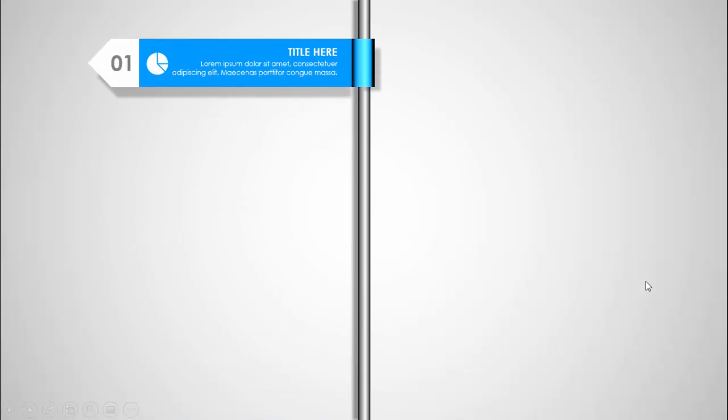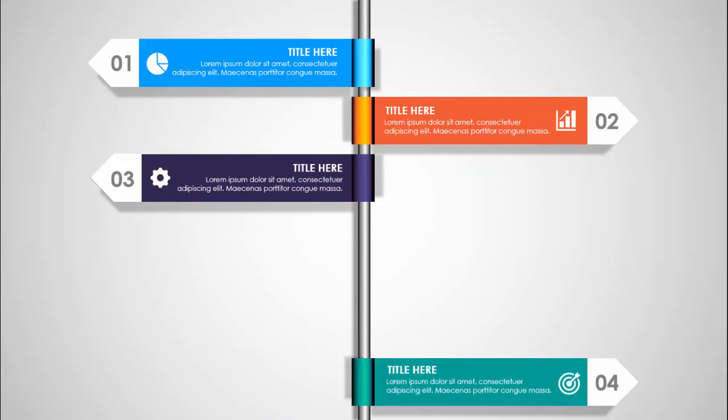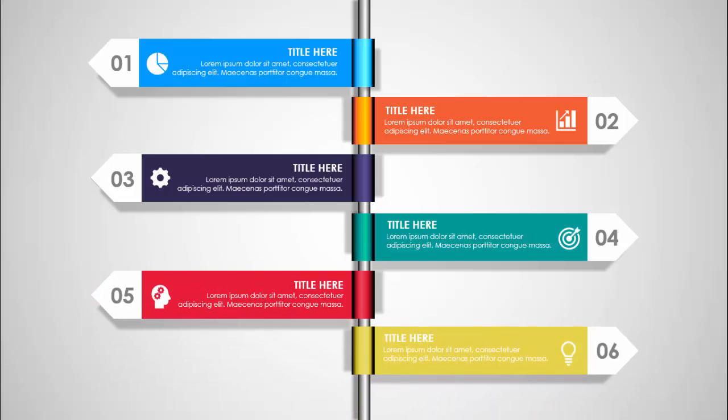In today's tutorial I'm going to show you how to create a six vertical options infographic slide in PowerPoint. When I click, you can see a pipe or rod comes in, then option one appears, then option two with a different color combination, then options three, four, five, and six. I've also created one more slide without animation, and you can change the option from the bottom as well.